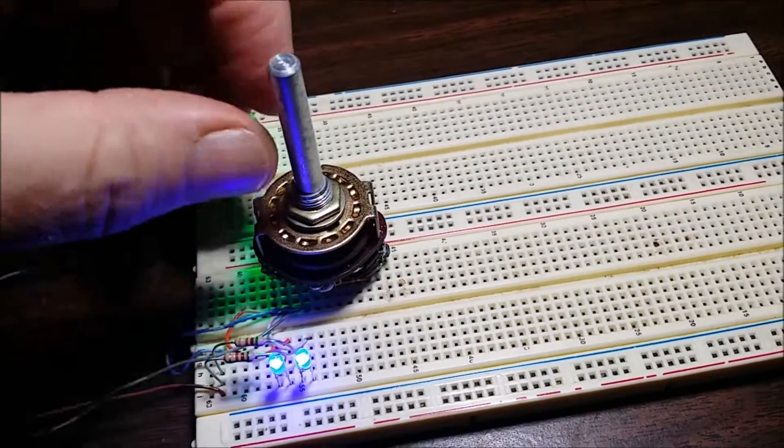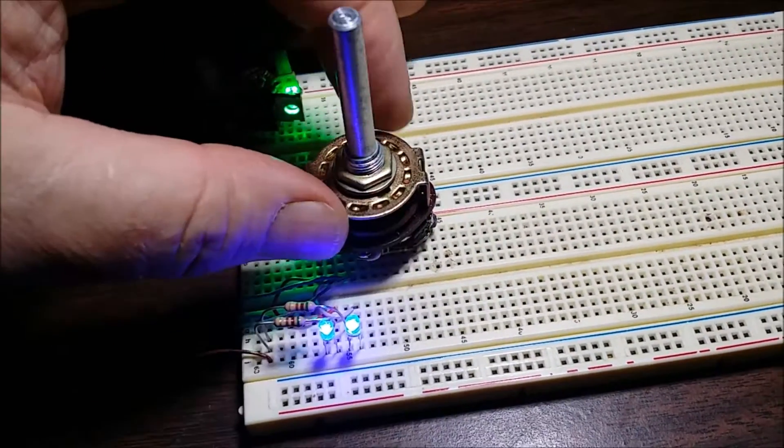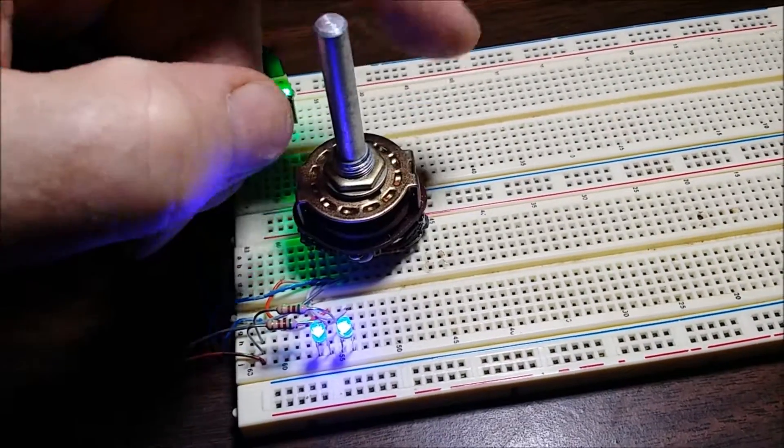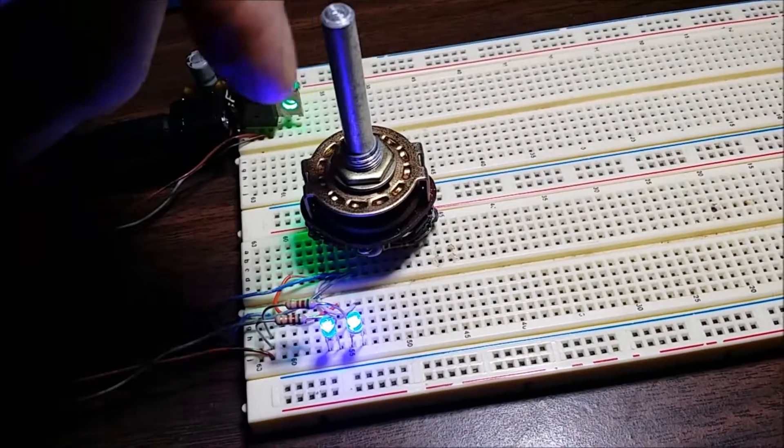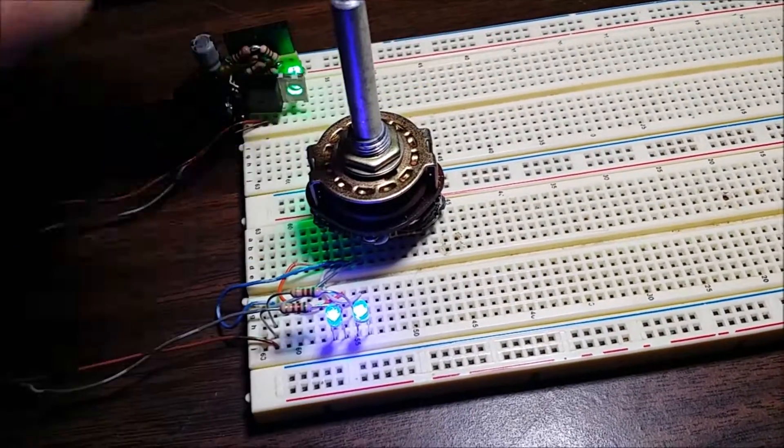Rotary switches normally give you 1 to 12 positions or whatever they're set for. This one here had no stops inside so it completely went all the way around. Some of these switches you can bend a little tab inside and make them go all the way around.